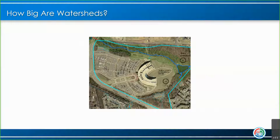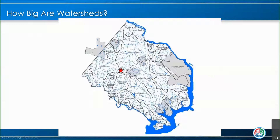So how big are watersheds? That depends on how you want to think about them. You can think of watersheds like measuring cups — how one fits within the next one. It really depends on the scale you want to look at. For example, this is the Fairfax County Government Center where I go to work. This turquoise line outlining it is the outline of the watershed — it's a small watershed that basically involves some of the land around the government center, the parking lot, and the building itself.